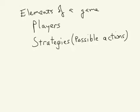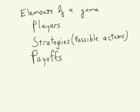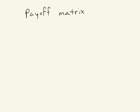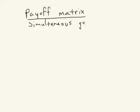Finally, to study a game you need to articulate the payoffs — the payoffs to all possible combinations of strategies on the part of all players. We use an abbreviated form to analyze games where both players take their actions and employ their strategies at the same time. We call these simultaneous games. The key is that both players take their actions not knowing what the other player is going to do or has done.